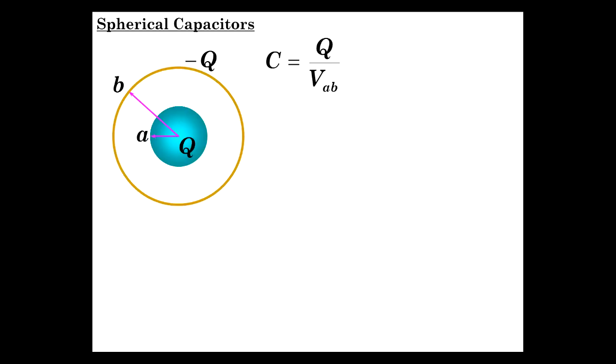C is Q over V_AB, just to find it. So, all we need is V_AB because the charge is Q. We're looking at the magnitude of the charge. So, let's do V_AB. This is familiar to us. Let's integrate the E field.